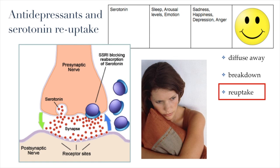Serotonin is another neurotransmitter affecting our moods, sleep, arousal levels, emotions, feelings of sadness, happiness, and depression. Clinical depression is sometimes caused by an imbalance in neurotransmitters. One way antidepressants work is by stopping or reducing the reuptake of serotonin by the presynaptic axon terminal, allowing serotonin to continue stimulating receptors and hopefully reducing feelings of depression. This is an oversimplification — there are many ways antidepressants work and many effects of neurotransmitters — but it gives a general sense of how neurotransmitters function.